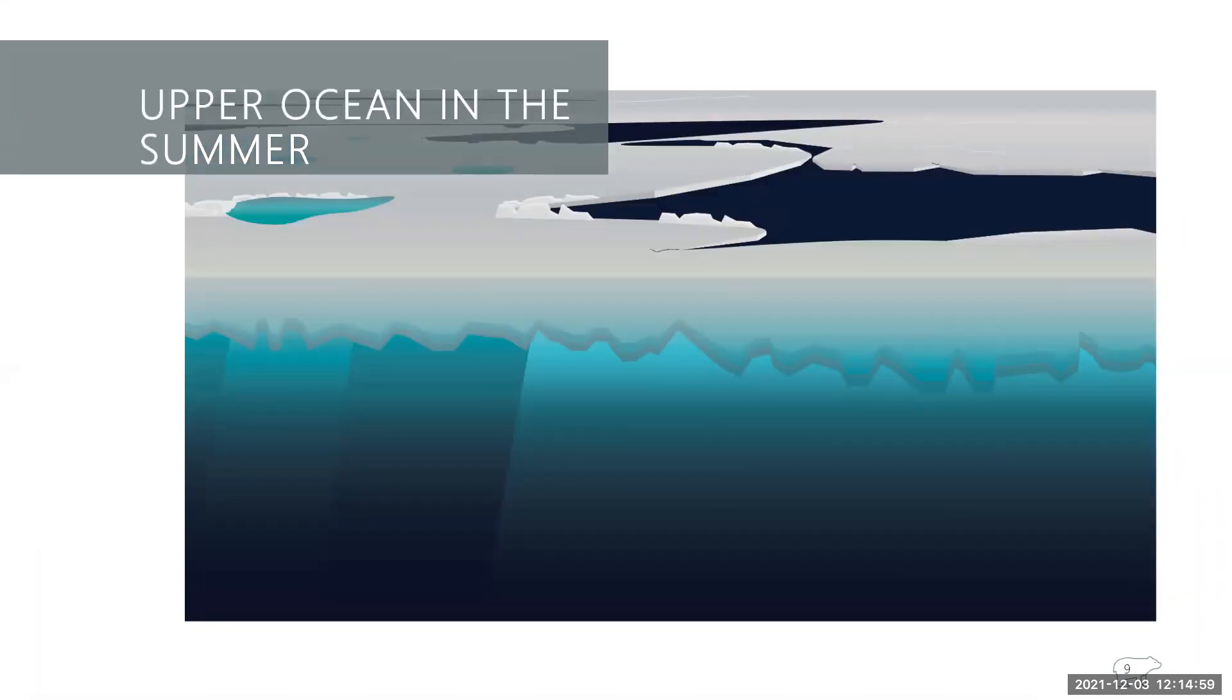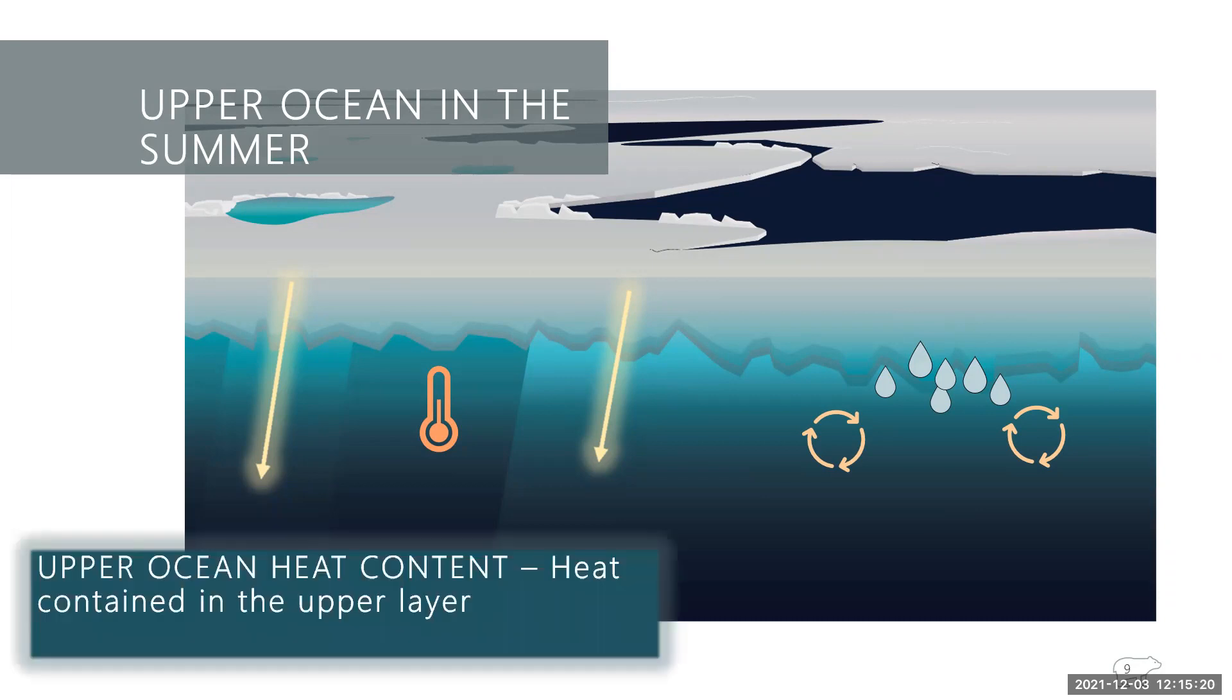So as that solar radiation enters the upper oceans in those pathways I just described, it can do about two things, two big things. One is heat up the mixed layer, or it can be used to melt ice from the underside called basal melting. And a term associated with the heat is called upper ocean heat content, which is heat contained in the upper layer. But studies in various areas in the Canada basin have found that sunlight that enters through open water alone can account for the observed basal melting. And because of this, it's important to have an accurate understanding of how much open water there is in a given area.